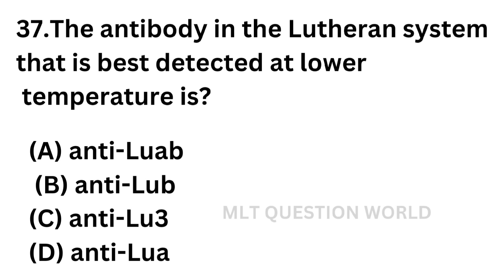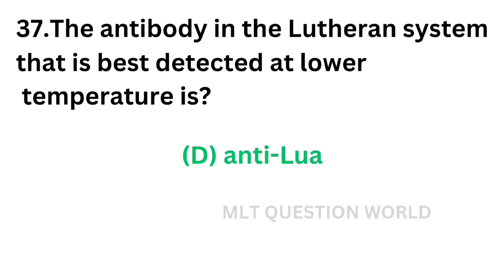Question No. 37. Which Lutheran antibody is best detected at lower temperature? Option A: Anti-Lutheran A-B. Option B: Anti-Lutheran B. Option C: Anti-Lutheran 3. Option D: Anti-Lutheran A. The correct answer is Option D — Anti-Lutheran A, which is best detected at lower temperature.